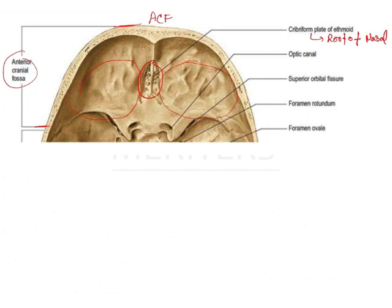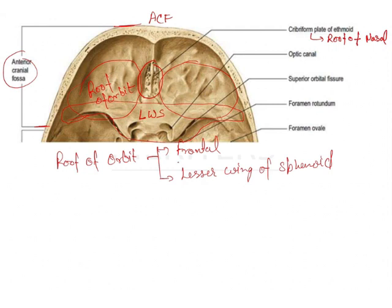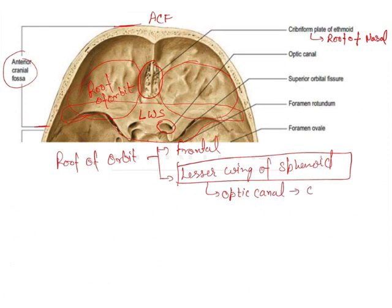This area is going to form the roof of the orbit. The roof of the orbit is formed by two bones — one is your frontal bone and the other is your lesser wing of sphenoid, seen in the anterior cranial fossa. In the lesser wing of sphenoid you will notice an optic canal, and this optic canal gives passage to the optic nerve that goes from the eyeball to the brain.